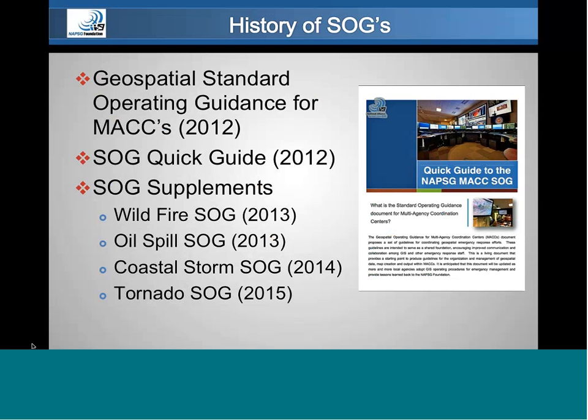We have a history at NAPSIG with the SOGs. The overall SOG, the third version, was put out in 2012, along with a quick five-page guidance document that condensed it and made it easy to read and quickly understand why you'd want to read the entire document. Since then, in 2013 we did two SOGs — one for wildfires, another for coastal oil spills — and then last year a coastal storm SOG, and of course this year, the tornado.